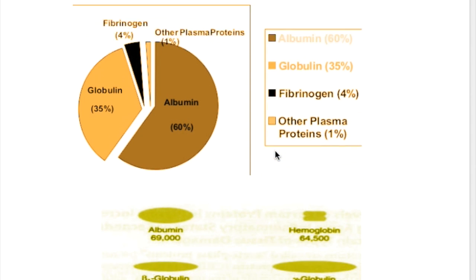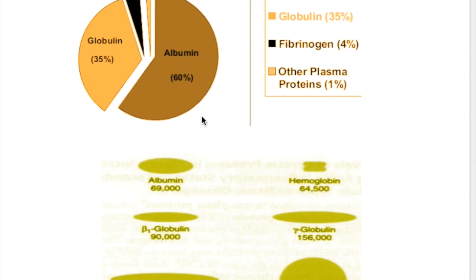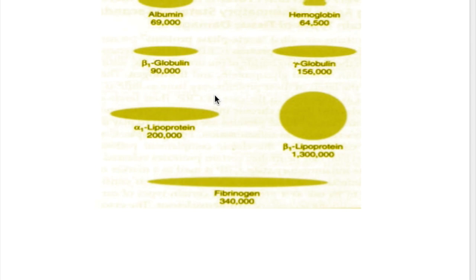What are the different percentages of plasma proteins? Albumin constitutes 60%, globulin 35%, fibrinogen 4%, and the rest 1%. Which is the heaviest? Fibrinogen is the heaviest of the three, with a molecular weight of 340,000, while albumin is the lightest at 69,000. Only beta-1 lipoprotein is heavier than fibrinogen.